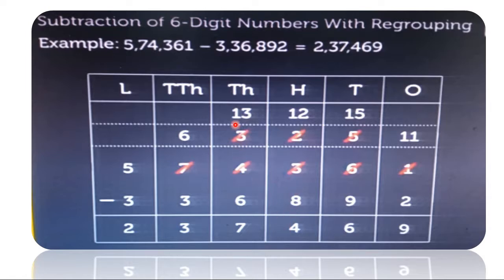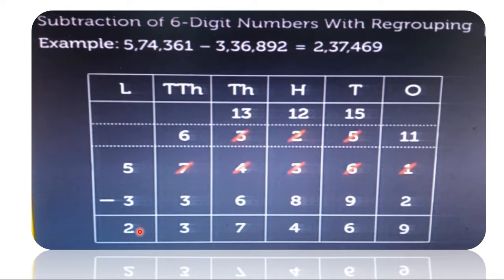At the thousands place we have 3. We couldn't subtract 6 from 3, so we will borrow from the ten-thousands place. 3 becomes 13. So 13 minus 6, we got difference 7. Here we have 6, so 6 minus 3, we got difference 3. And 5 minus 3, we got difference 2. So the answer will be 2,37,469.